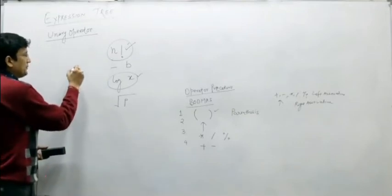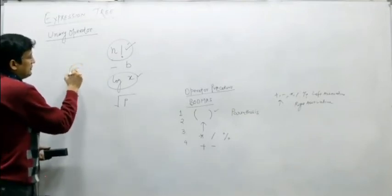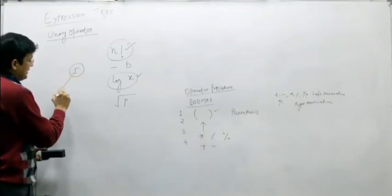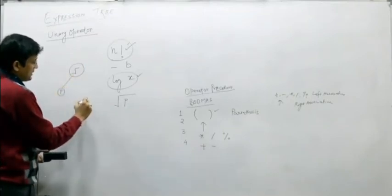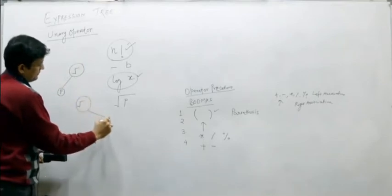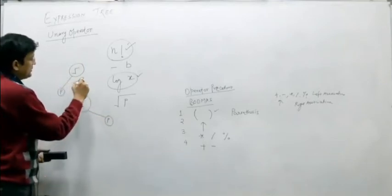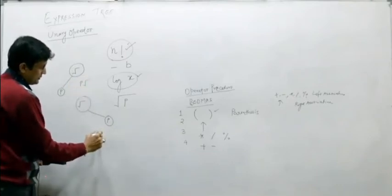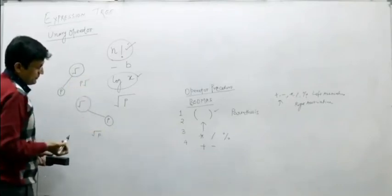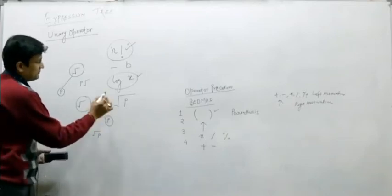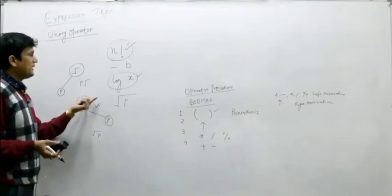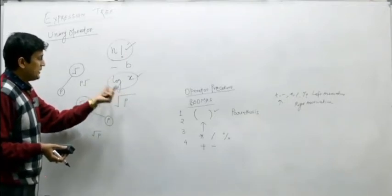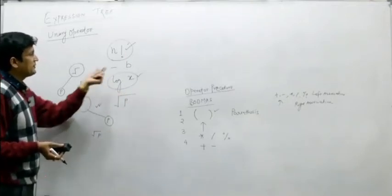For under root P, under root is the internal node and P can be on the left or the right. The in-order traversal of one tree gives P under root, and the other gives under root P. The second one is correct. So, when building expression trees for unary operators, the in-order traversal should result in the same expression.